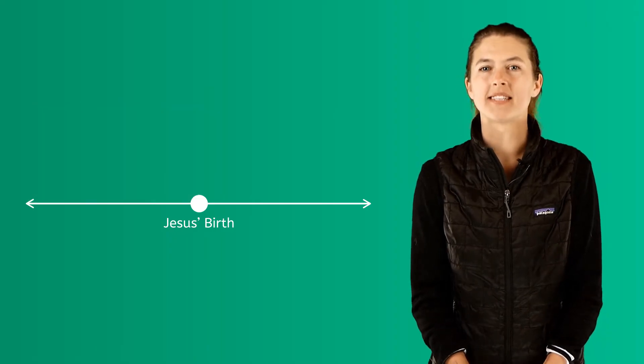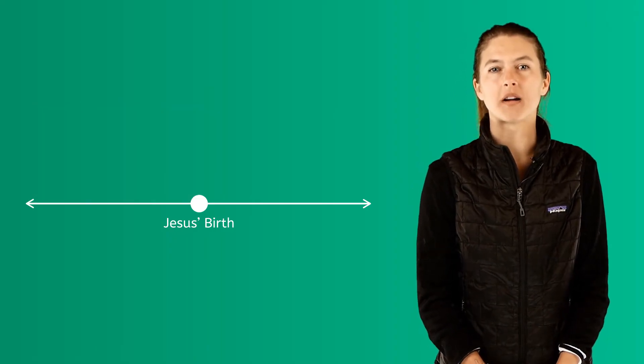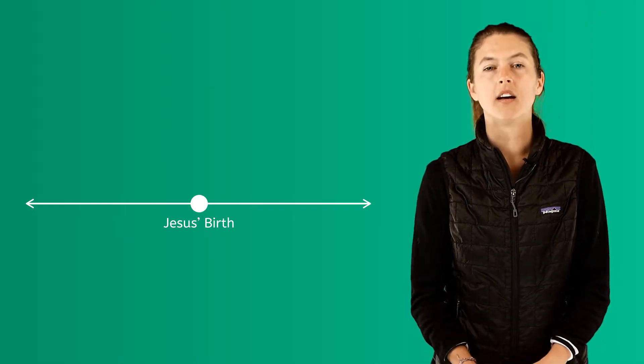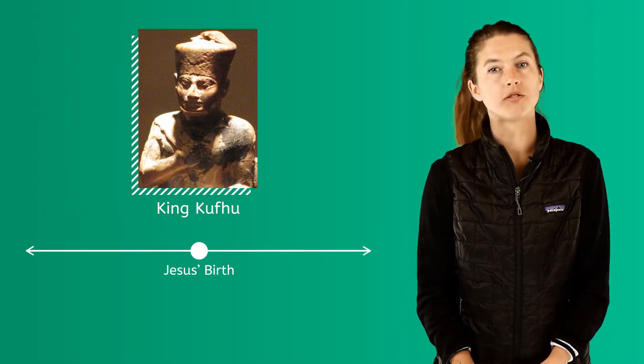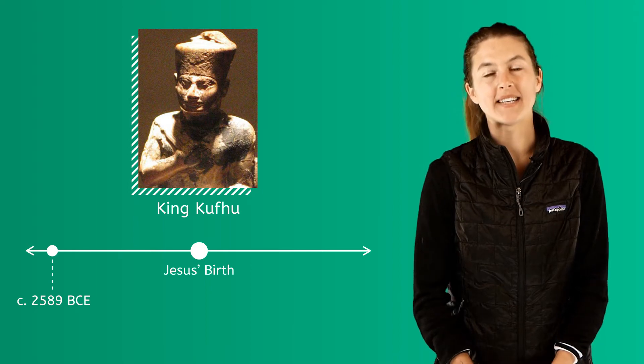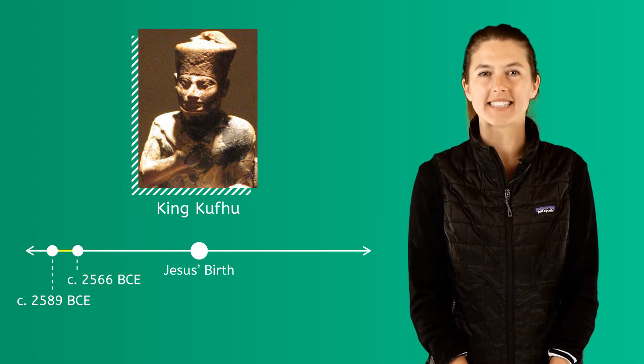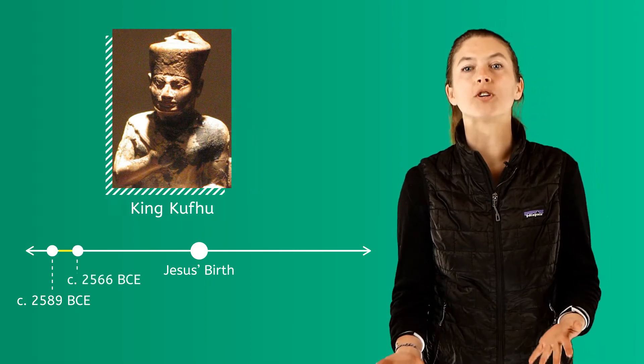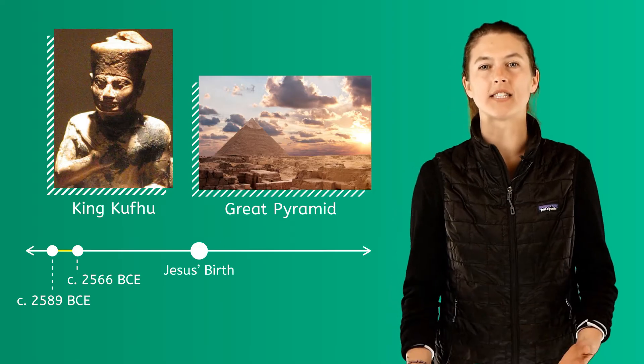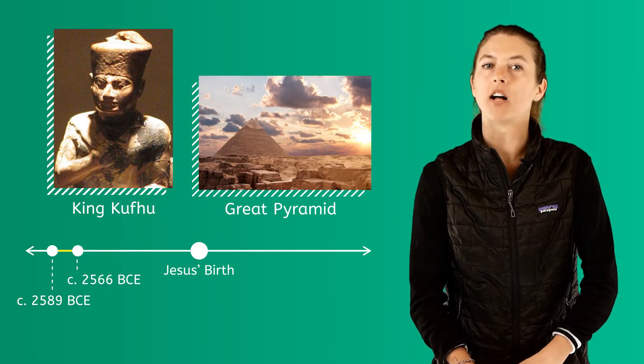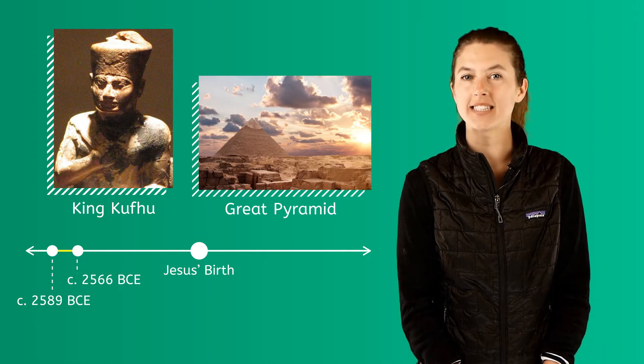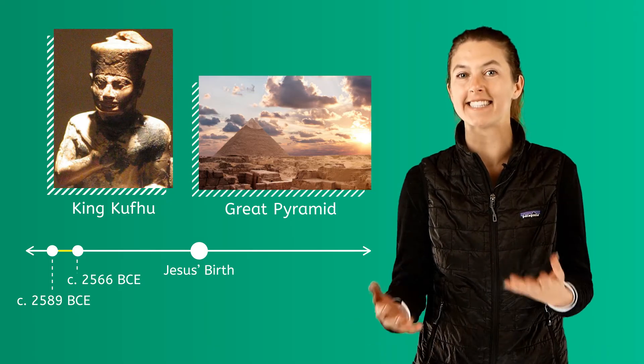Some famous Egyptian pharaohs that we know about today and are quite popular to study are Khufu, who ruled during 2589 BCE to 2566 BCE and built the Great Pyramid as his magnificent tomb. Egyptologists are still studying this pyramid and make interesting new discoveries every day.